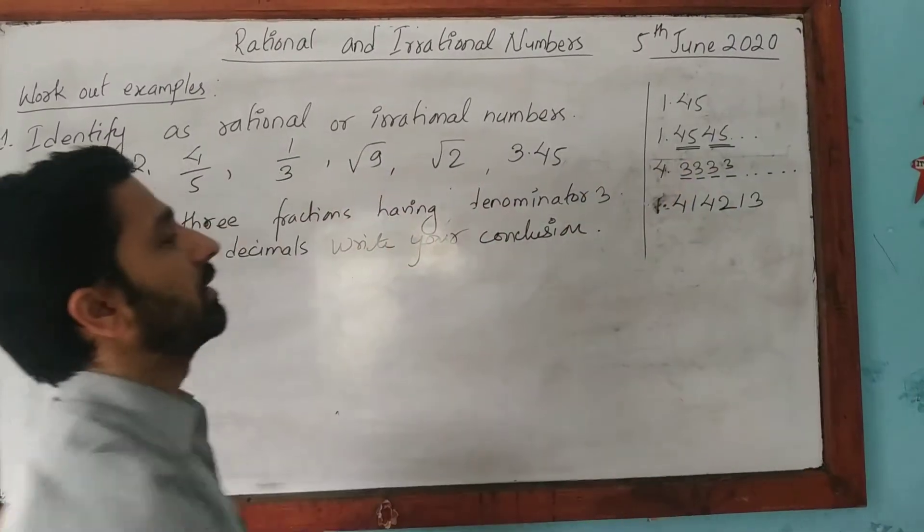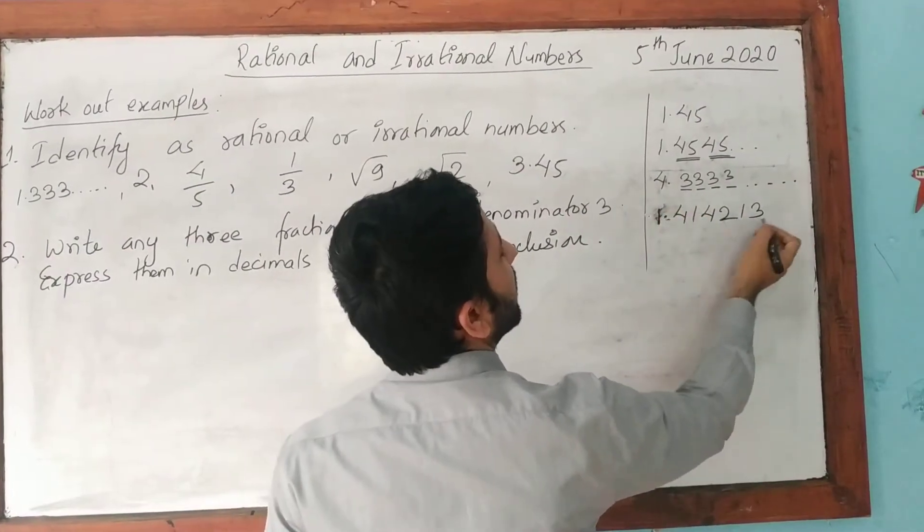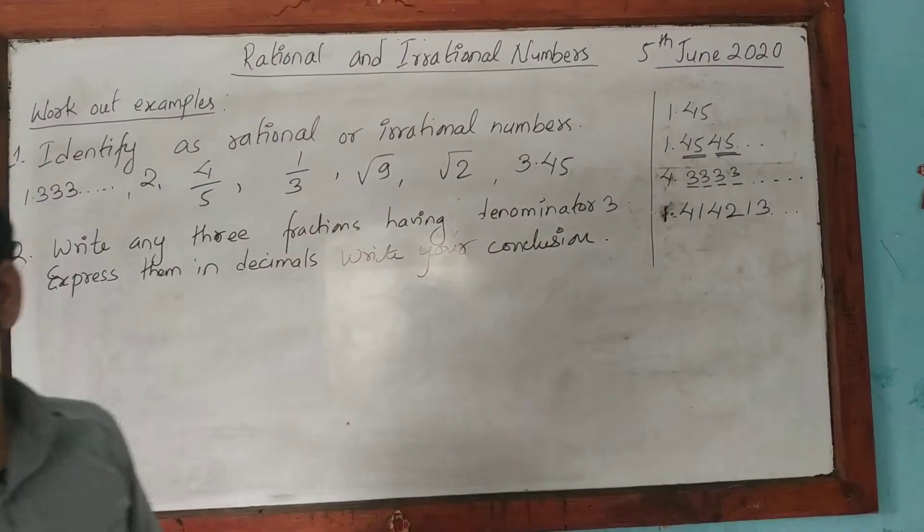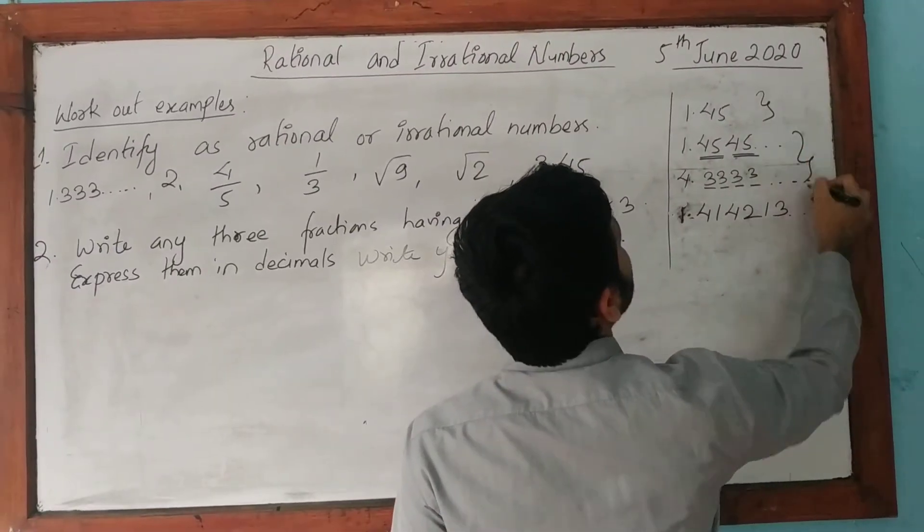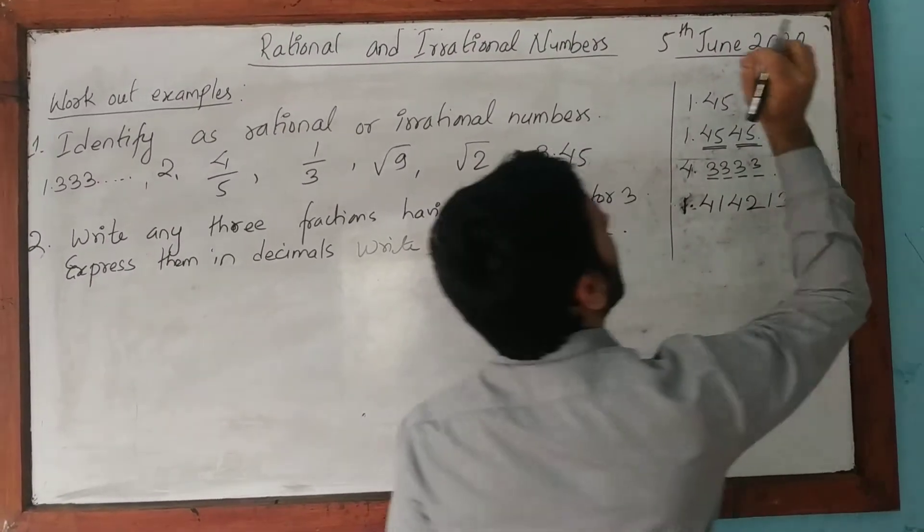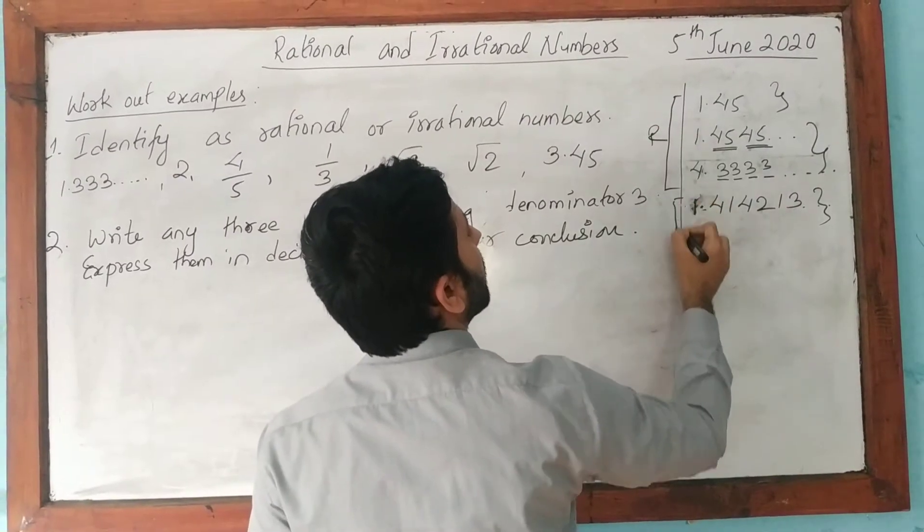Let me do 1.414213. Here, the number after 4 there is 1, and after 4 there is 2. Again, it is 1 and 3. That means it is non-terminating and non-recurring. Now, three sets of decimals: 1, 2, 3. These two are rational, and this is irrational.